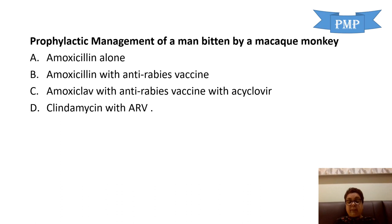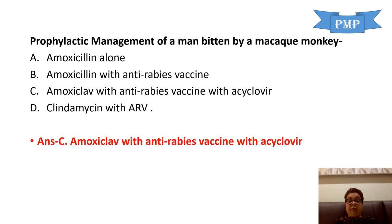Prophylactic management of a man bitten by a macaque monkey. Options: amoxicillin alone; amoxicillin with anti-rabies vaccine; amoxiclav with anti-rabies vaccine with acyclovir; clindamycin with anti-rabies vaccine. The answer is option C: amoxiclav with anti-rabies vaccine with acyclovir.